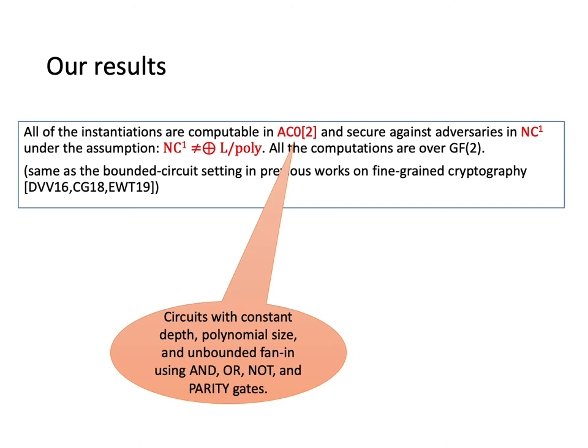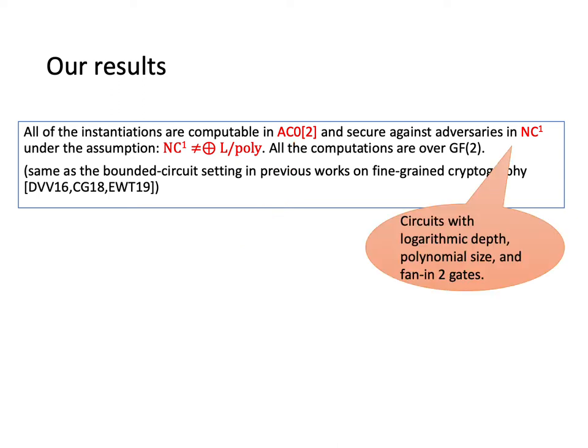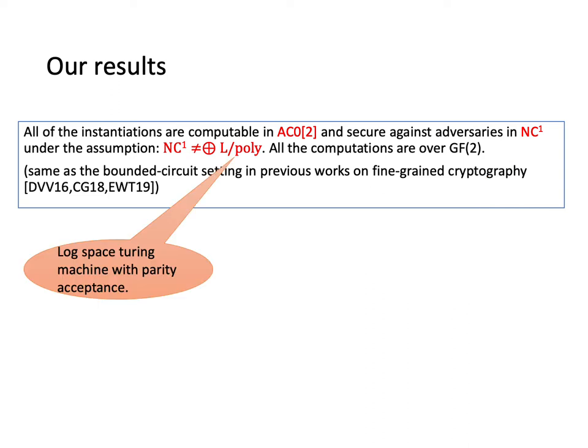Here, AC0² includes circuits with constant depth, polynomial size, and unbounded fan-in using AND, OR, NOT, and parity gates. NC¹ includes circuits with logarithmic depth, polynomial size, and bounded fan-in gates. Note that NC¹ includes AC0². Parity L/poly includes log space Turing machines with parity acceptance.